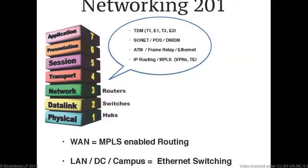From layer two, at WAN links we had ATM and frame relay — packet switched networks — where service providers gave you VPNs. Then Ethernet came along. In data centers, Ethernet was always the predominant layer two technology, and cost reductions allowed us to move Ethernet to the WAN. We started with 10 megs, moved to 100 megs, gig, 10 gig, and now we have 40 gig and 100 gig. Service provider cores are built with N-number of 100G links. Ethernet has taken over the world at layer two.